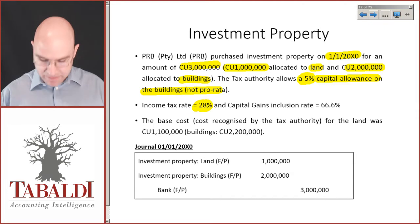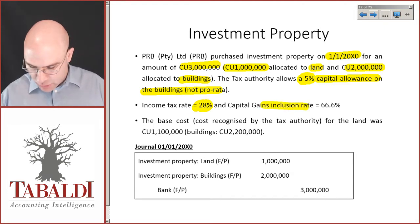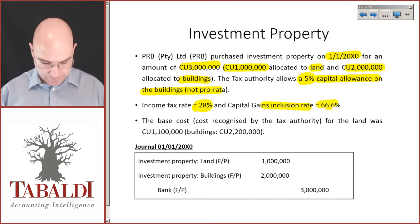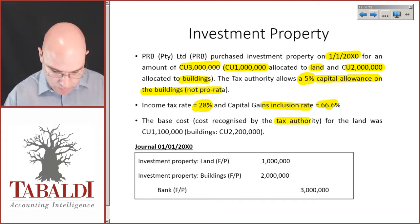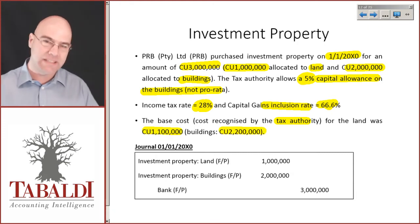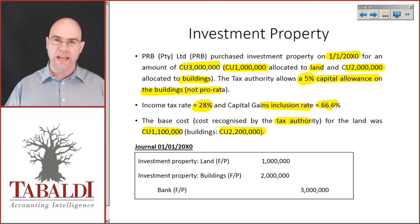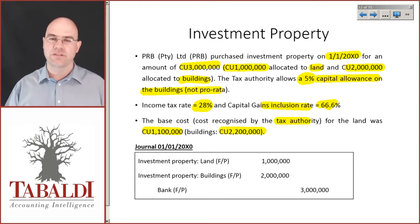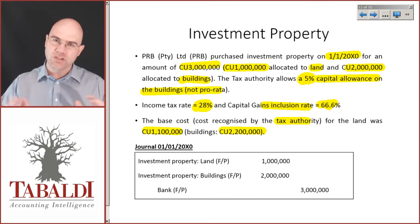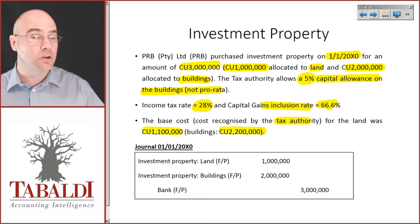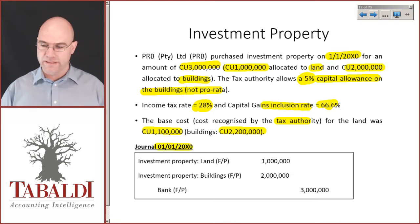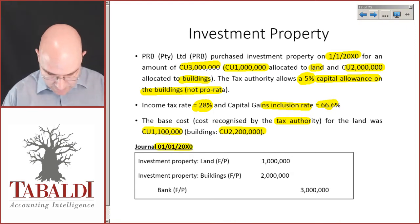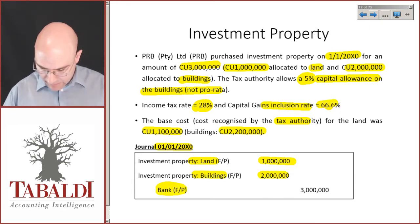Income tax is 28 percent. Our CGT inclusion rate is 66.6 percent. The base cost recognized by the tax authority for the land was 1.1 million and for the buildings 2.2 million. Just assume that's the way it is — this is not a course on tax legislation. The journal on 1 January 20x0 is: debit investment property land 1 million, debit buildings 2 million, credit bank 3 million.